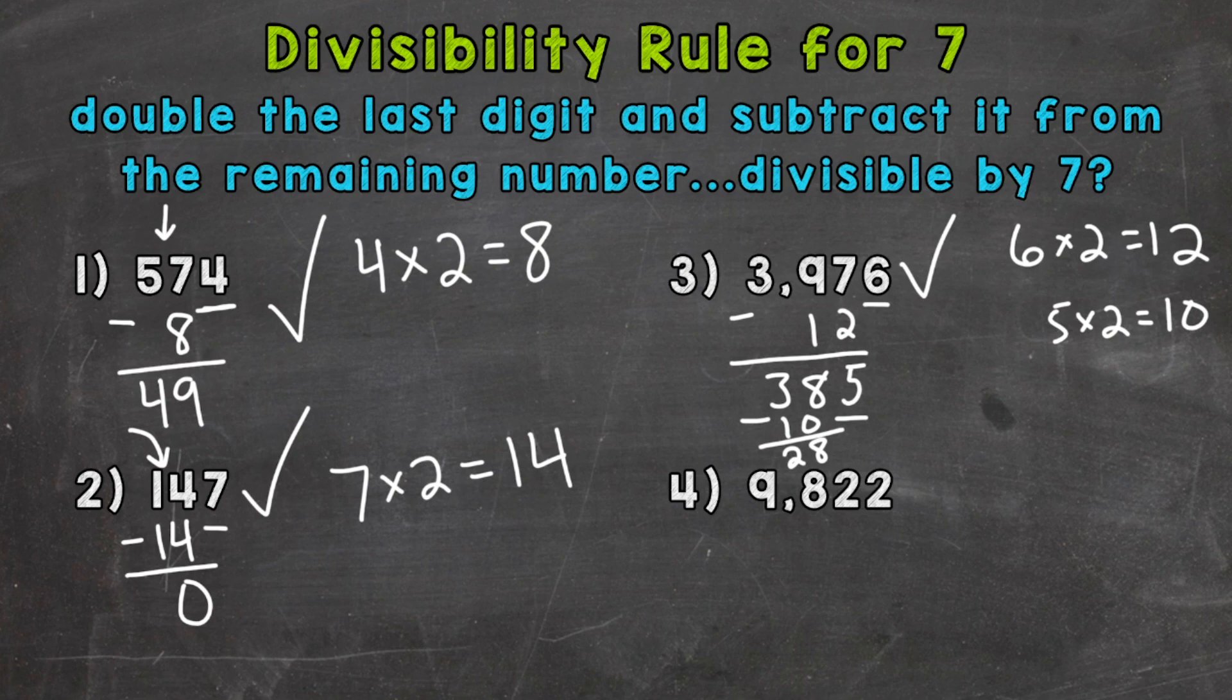So let's move on to number 4 here, where we have 9,822. Our last digit here is a 2, so let's double it. 2 times 2 equals 4. And now we need to subtract it from the remaining number, which is 982. So 982 minus 4. That's going to give us 978.